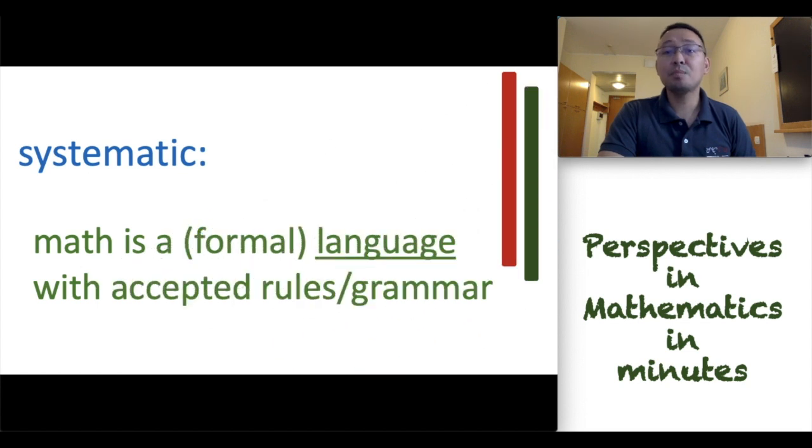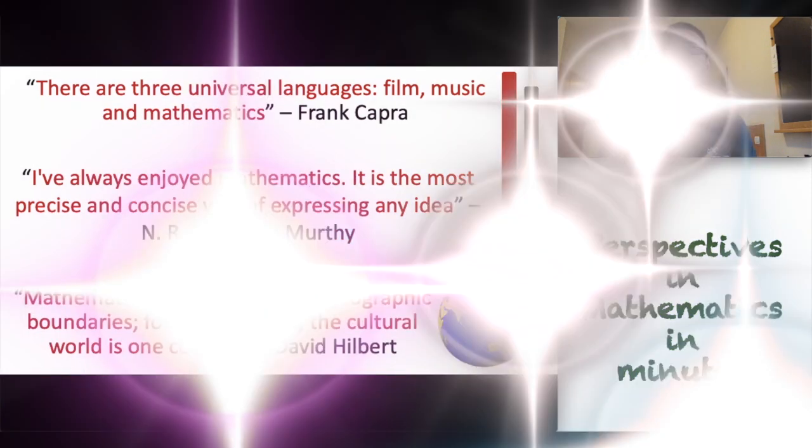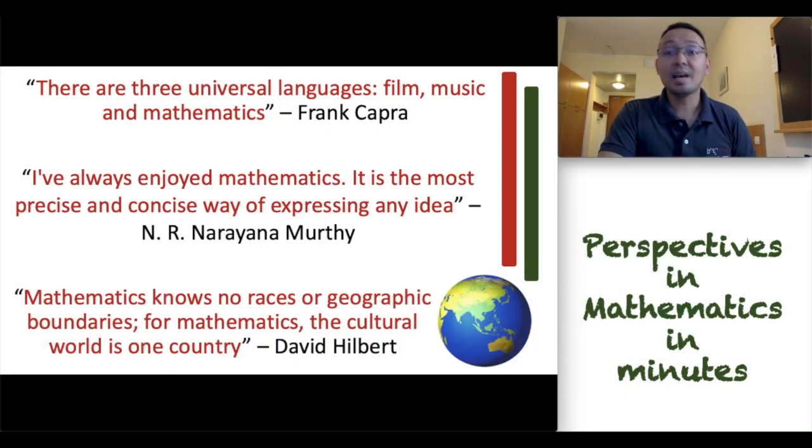What does systematic mean? For me, this means that math is a formal language with accepted rules and grammar. The symbols, notation, statements, and practices in mathematics are all part of the language system that the mathematical community has developed.